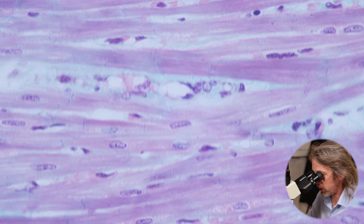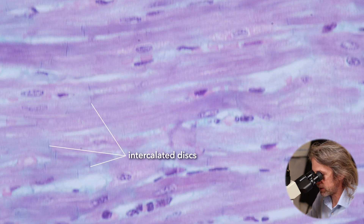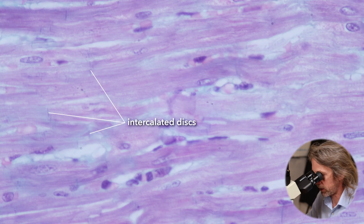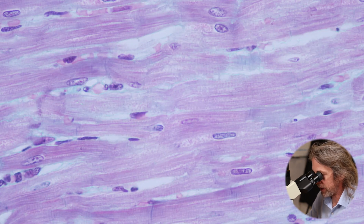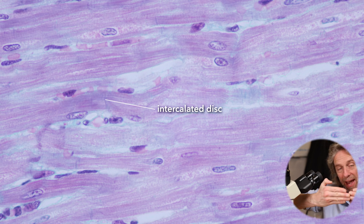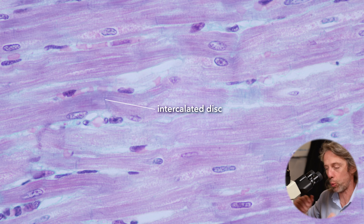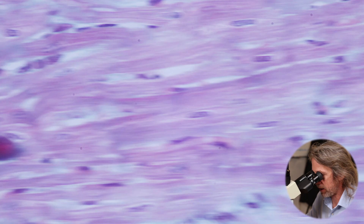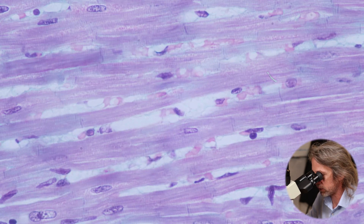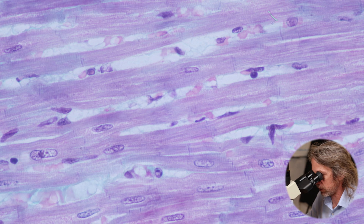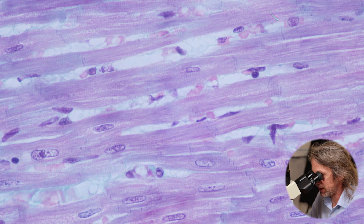The other key feature to look for are intercalated discs. I can see that dark mark in the middle — the intercalated disc marks where one cardiomyocyte ends and the next cardiomyocyte begins. It's a join between two neighboring cardiomyocytes. So we don't have very long cells as with skeletal muscle; we have shorter cells joined together by these intercalated discs.